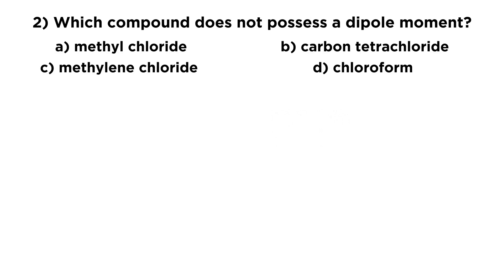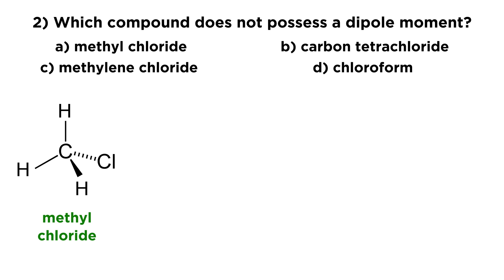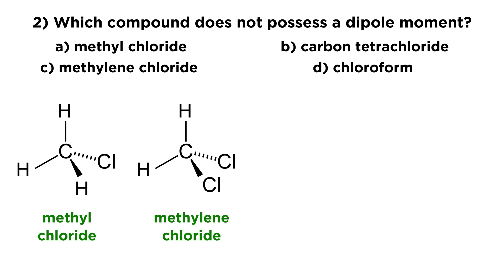The second question asks which compound does not possess a dipole moment, with four options. Let's draw these structures out. Methyl chloride — methyl means CH3 — so this molecule, also called chloromethane, is just CH3Cl. These are all derivatives of methane, replacing hydrogen atoms with chlorine. Methylene chloride means CH2Cl2 — we take methyl chloride and replace another hydrogen with another chlorine atom.